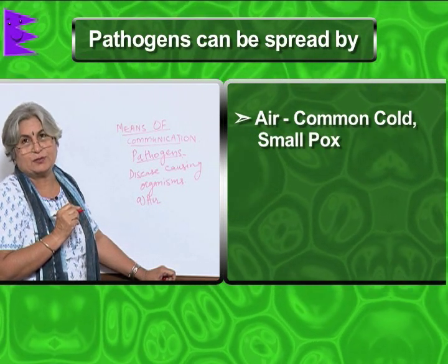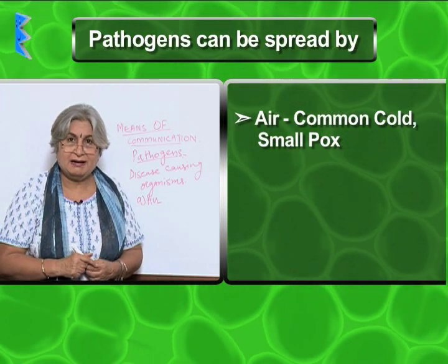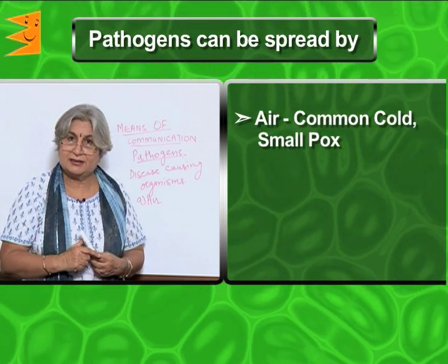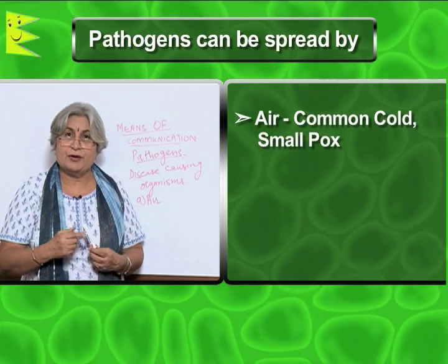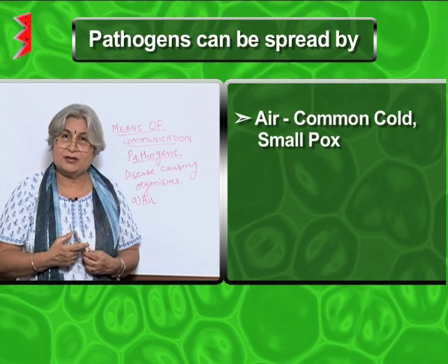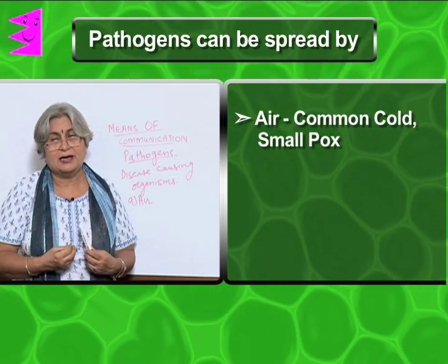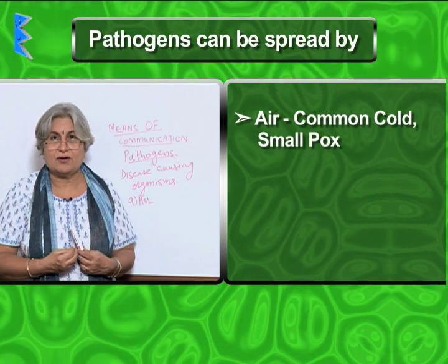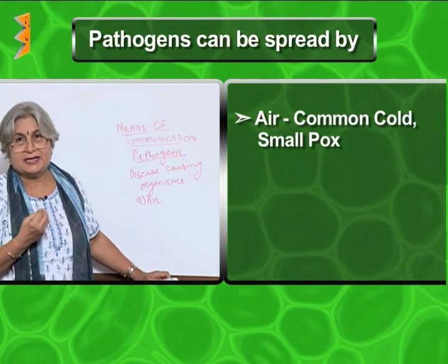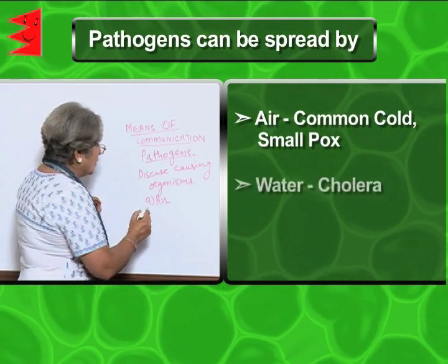Why do we take mineral water? Because other water may be contaminated — it may contain bacteria and viruses. These days there are many ads for pure water, RO systems, and filters because water can be the greatest source of infection. Animals are bathed in the same water source, clothes are washed in it, and industrial waste falls into it, making it a source of infection. Diseases that spread through water, like jaundice and cholera, are called waterborne diseases.